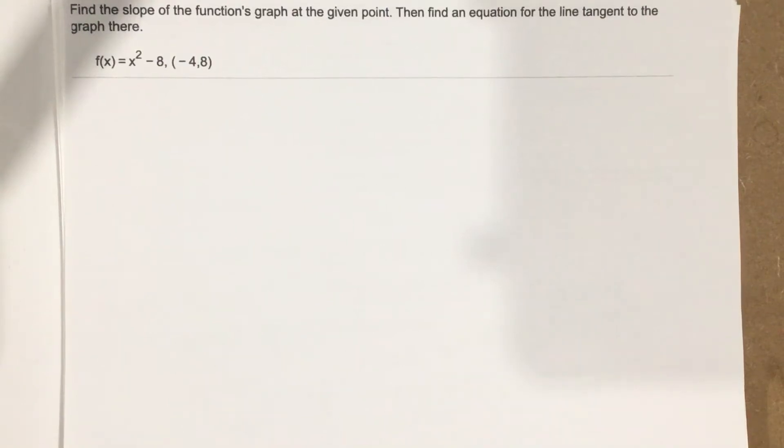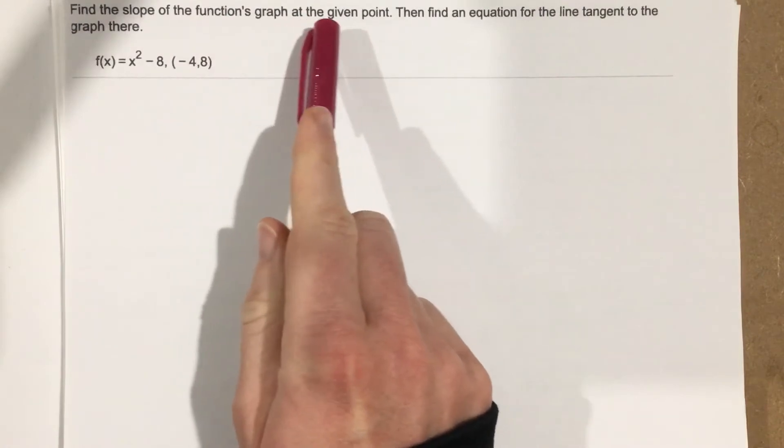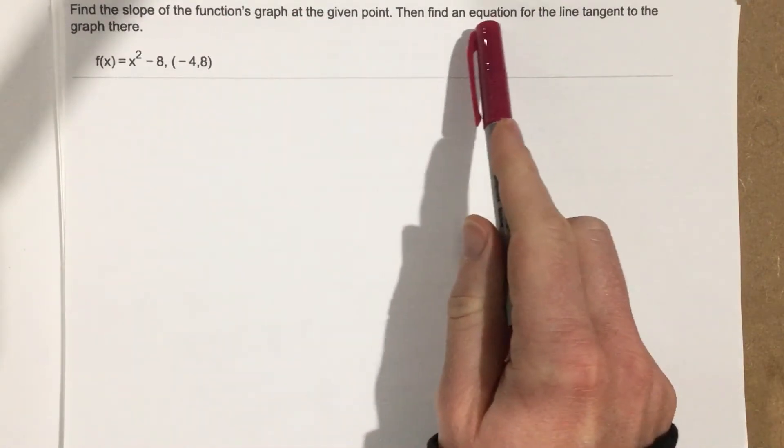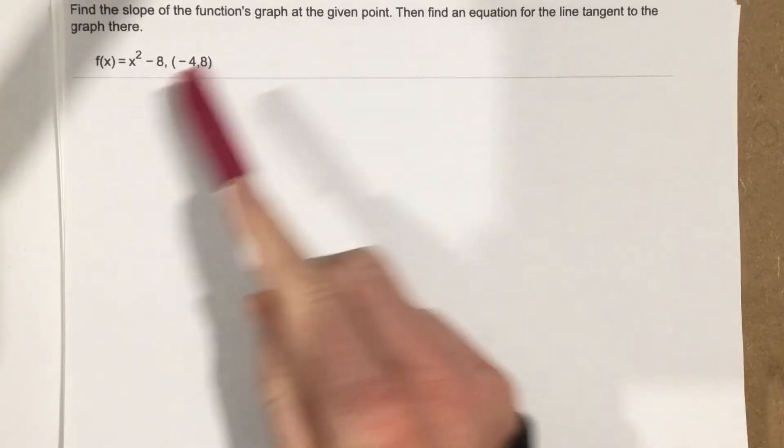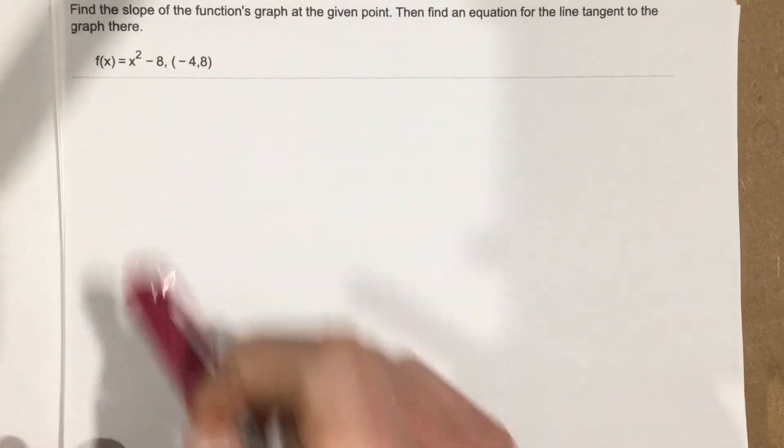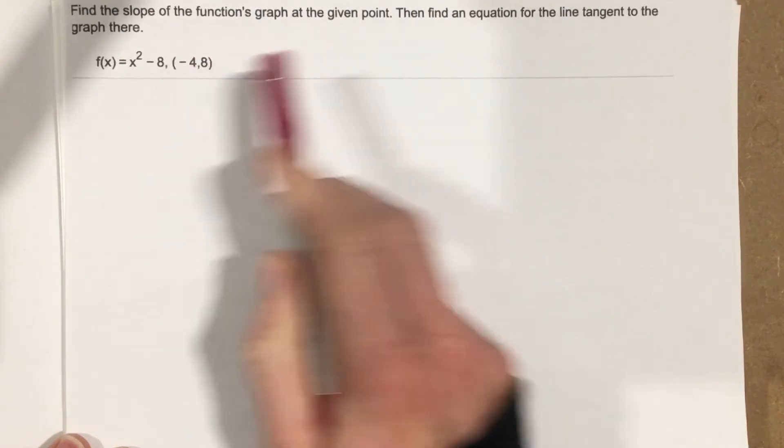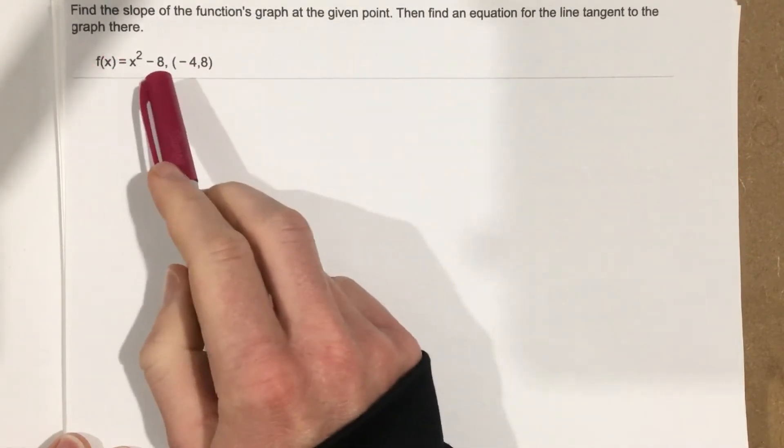This is problem number 3 for section 3.1. In this problem it says find the slope of the function's graph at the given point, then find an equation for the line tangent to the graph there. So they want us to find the slope of this function's graph at this point, but they also want us to write the tangent line for that spot.